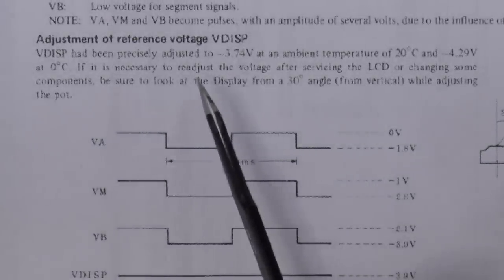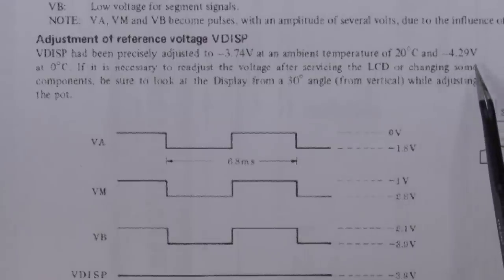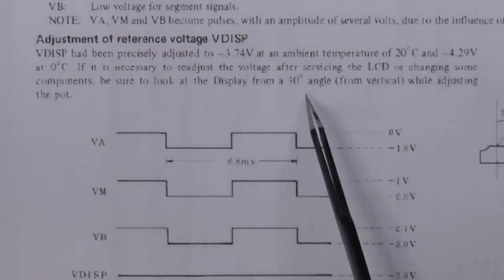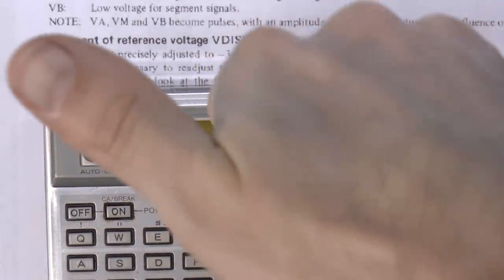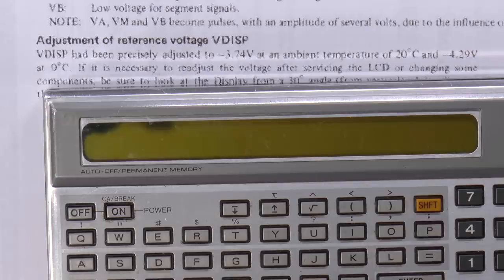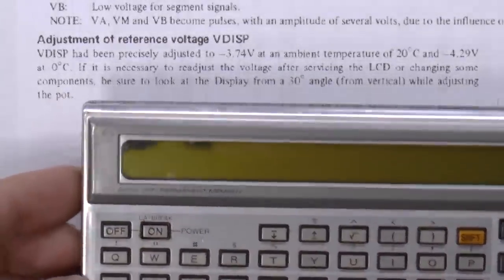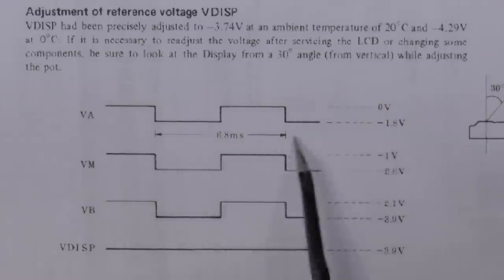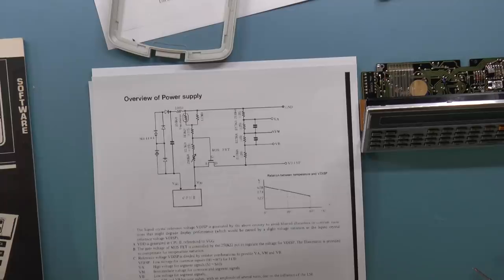Vdisp is the low voltage for the common signals, VA is the high voltage for the segment signals, VM is some intermediate voltage, and Vb is a low voltage. And we have some waveforms over here and some voltages. It says that Vdisp had been precisely adjusted to minus 3.74 volts at 20 degrees Celsius, and minus 4.29 at 0 Celsius. And it does say that the display should be viewed from a 30 degree angle from vertical. That is actually one of the specifications of an LCD. This is called a 6 o'clock angle as opposed to a 12 o'clock angle. We also see the timing of these signals, 6.8 milliseconds.